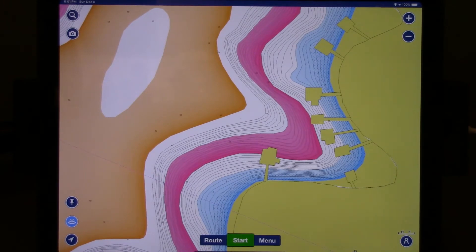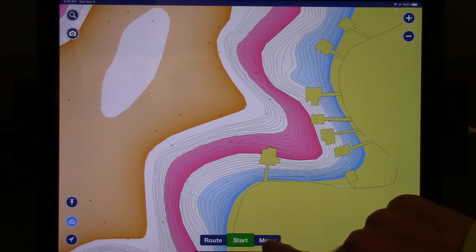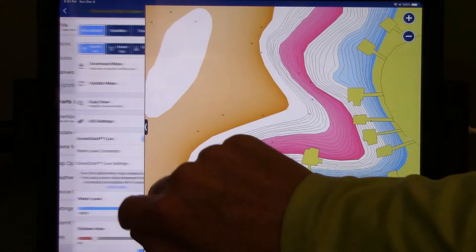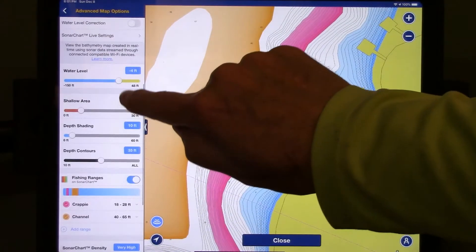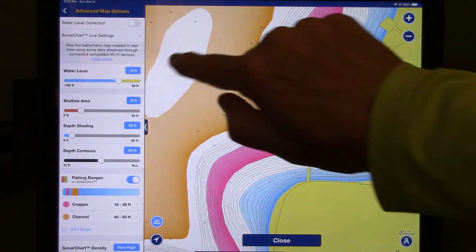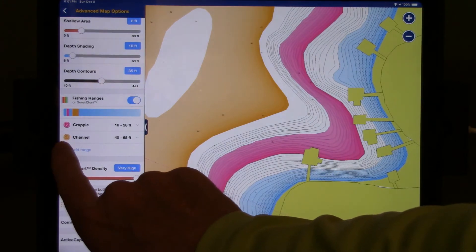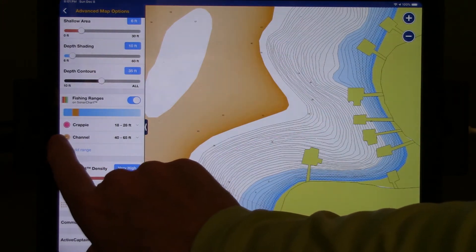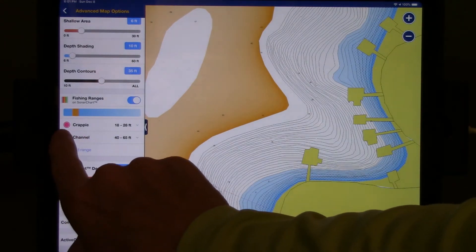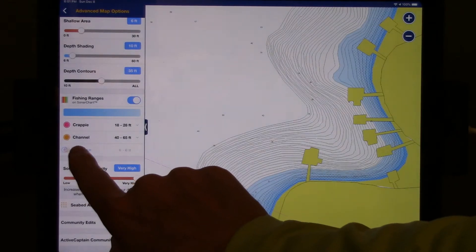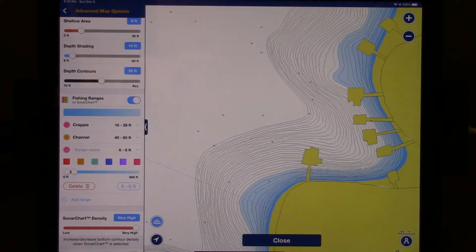So I've shown you how you could identify prime candidates for locating crappie. Let's change the game a little bit now and say that we're looking for a different species. Let's say we're looking for striped bass. The first thing I want to do is go back and press the menu button and select map options again. We'll scroll down. Our water level is going to remain four feet below full pool for the current body of water we're in. But I'm going to come down to fishing ranges. I'm not going to delete these ranges that I've defined earlier. I'm just going to turn them off. So I'm turning off crappie by touching that button and turning off channel by touching that button. I'm going to add a new range because my fishing report tells me that striped bass are holding over about a 60-foot bottom.